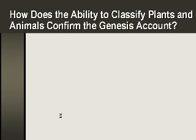How does the ability to classify plants and animals confirm the Genesis account? One of Linnaeus's objectives in systematizing the tremendous variety of living creatures was to equate what was known as the species to the biblical kind. He believed in what was called the fixity of species — in other words, one species couldn't change into another, which is what we believe. They couldn't evolve into one another.